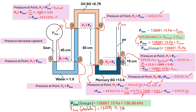To calculate the absolute pressure: P_gas(absolute) = 138881.15 Pa plus 101325 Pa = 240206.15 Pa, which is approximately 240.2 kilopascals. Thank you.